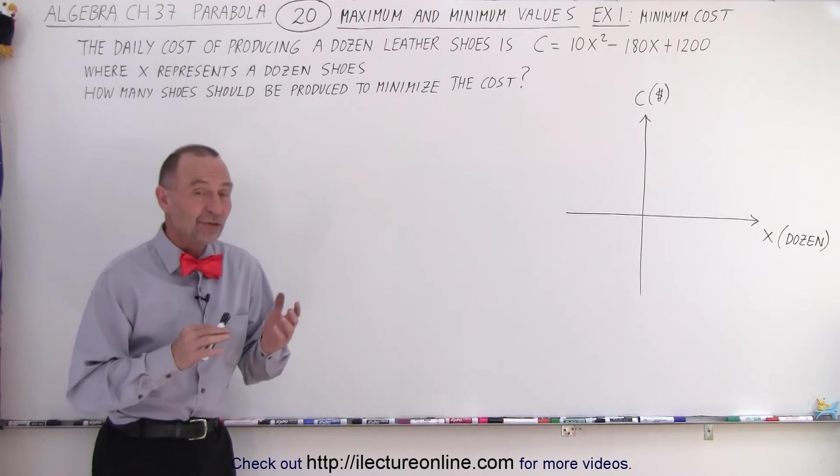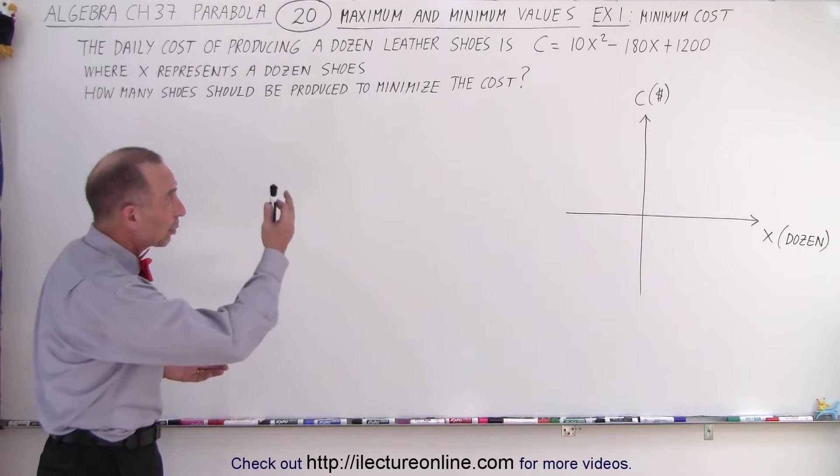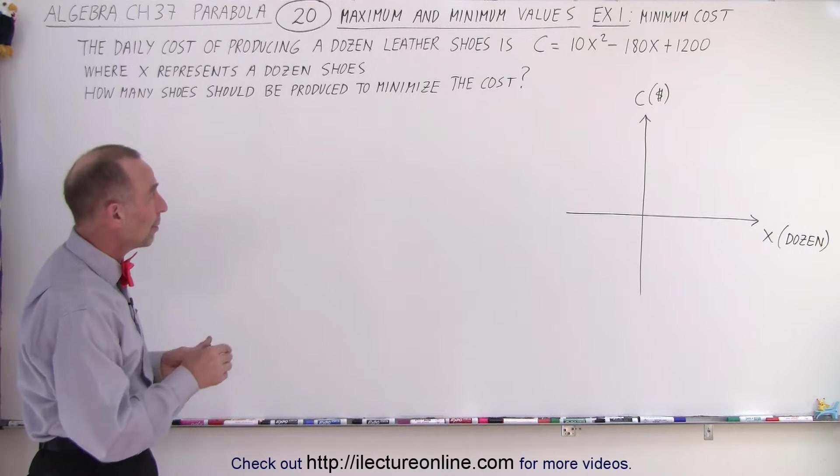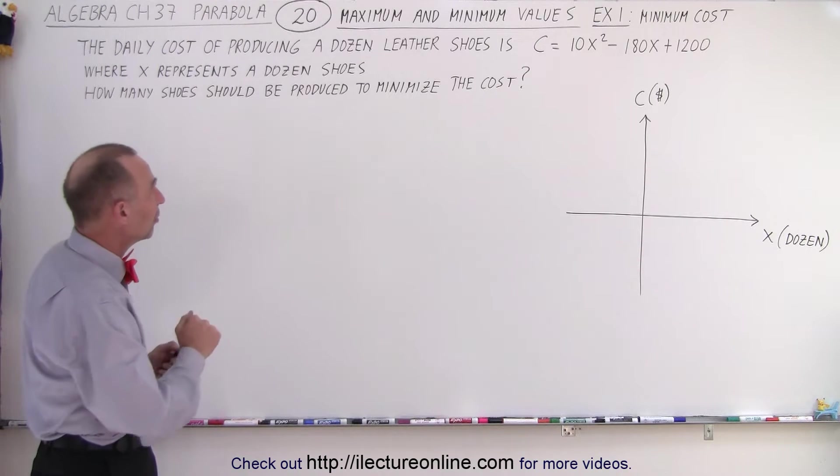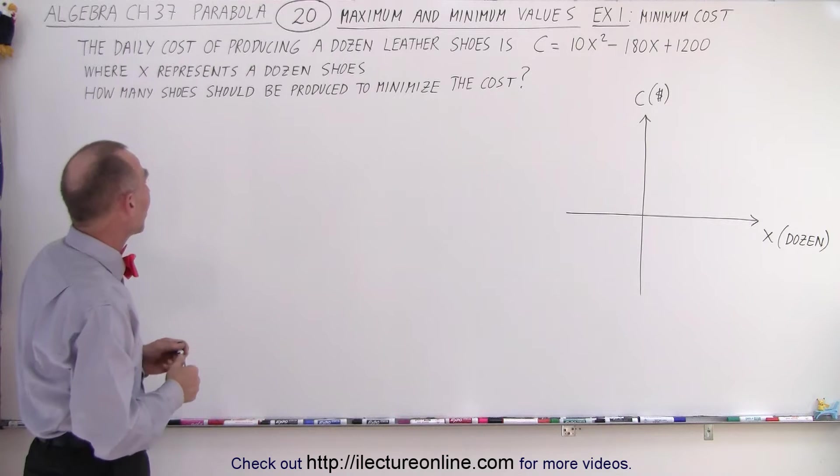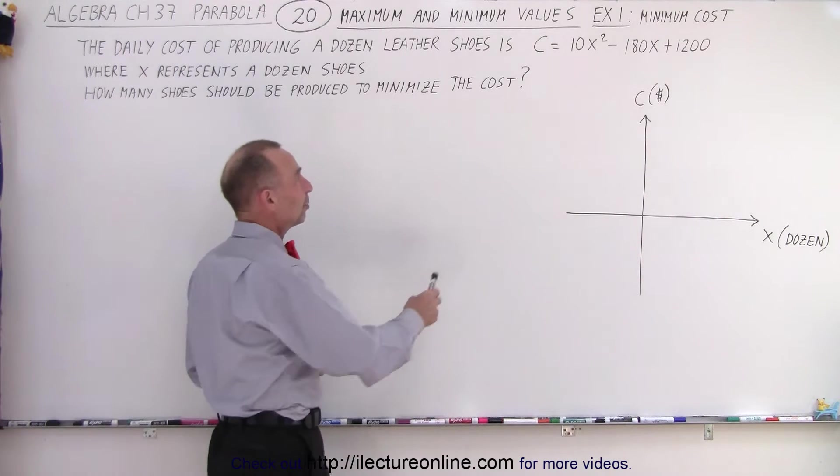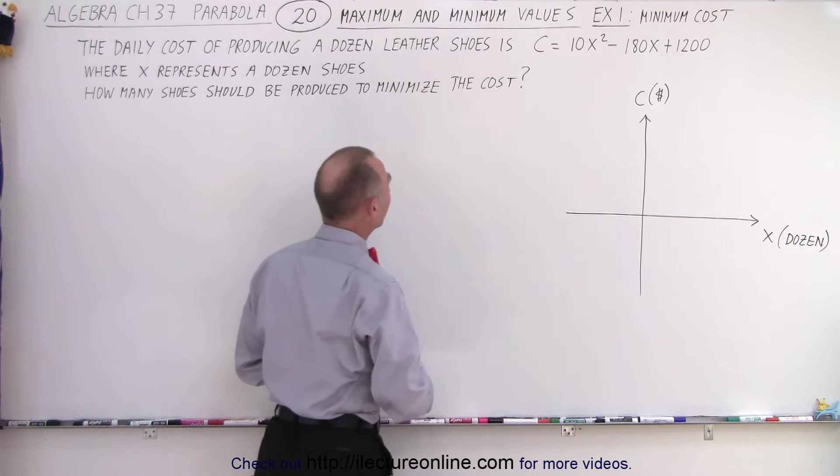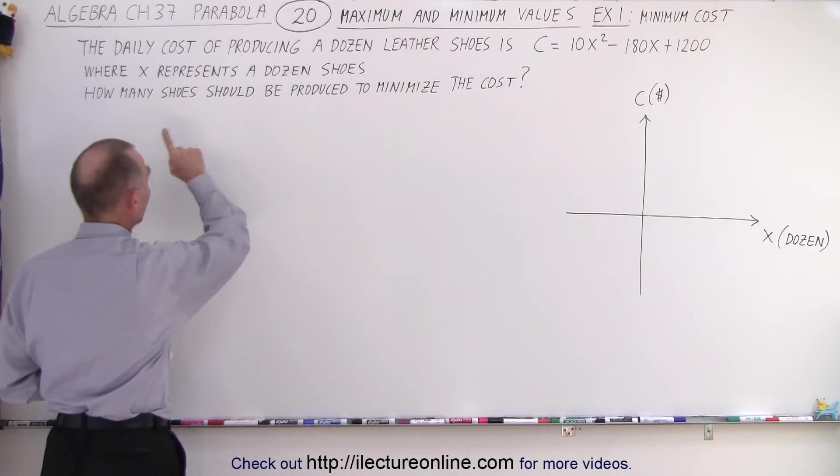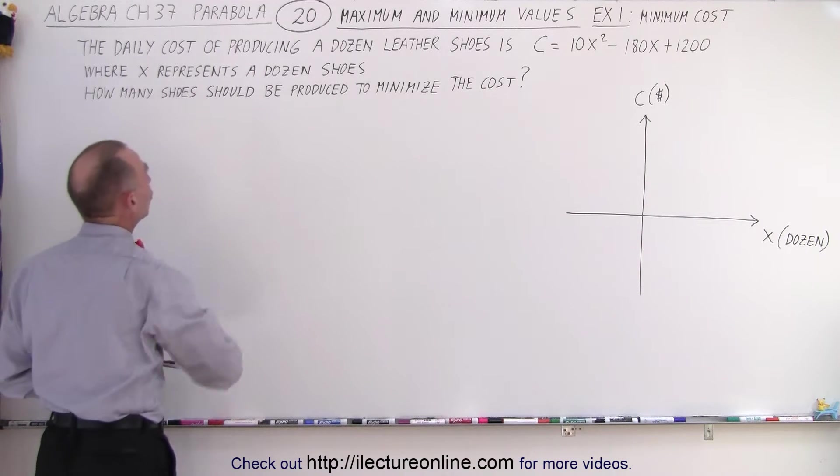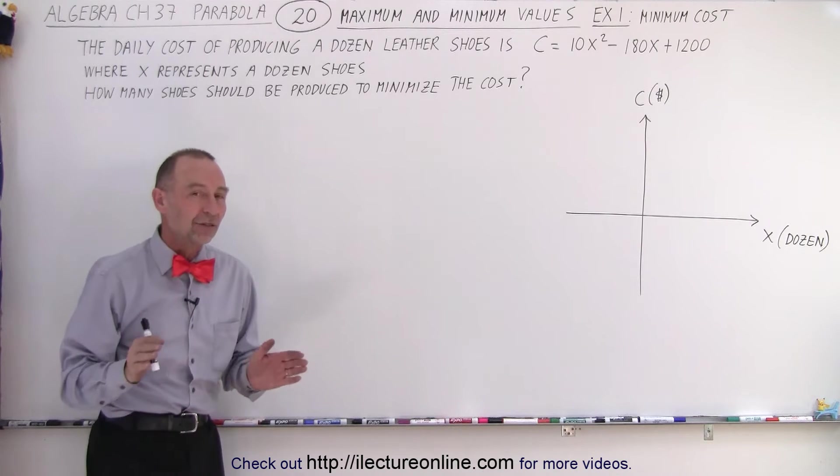So, how do we find the minimum cost? Well, we have a quadratic equation that represents the cost. Remember that x is in terms of dozens, and c is the cost in dollars. The daily cost of producing a dozen leather shoes is presented by this equation right there, and x represents a dozen shoes. How many shoes should be produced to minimize the cost?